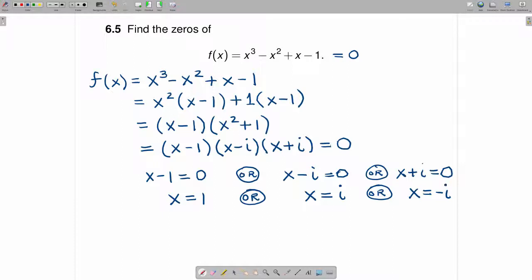So this particular polynomial, cubic polynomial, has three roots. And those three roots are x = 1, x = i, and x = -i.